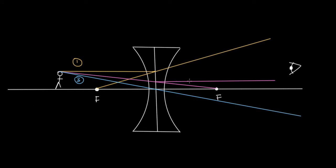So ray two is going parallel to the axis, like this. And so you can see that they meet up at this point here. And so that is the top of the man's head. And that is why the man appears more little.